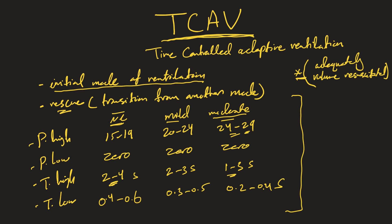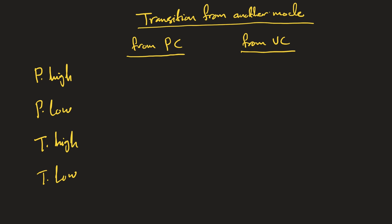Now let's talk about transitioning — switching a patient from another mode, either pressure control or volume control, to the TCAV method. TCAV is again a specific method of APRV used as an inverse ratio ventilation strategy.